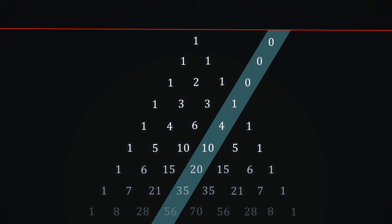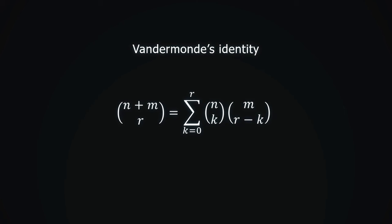If you're still not convinced of the superiority of this method, then I challenge you to prove the following identity using induction. It's not too difficult, but it is tedious, and doesn't allow us to understand the meaning of this identity, or to generalize it further. This is Vandermonde's identity.